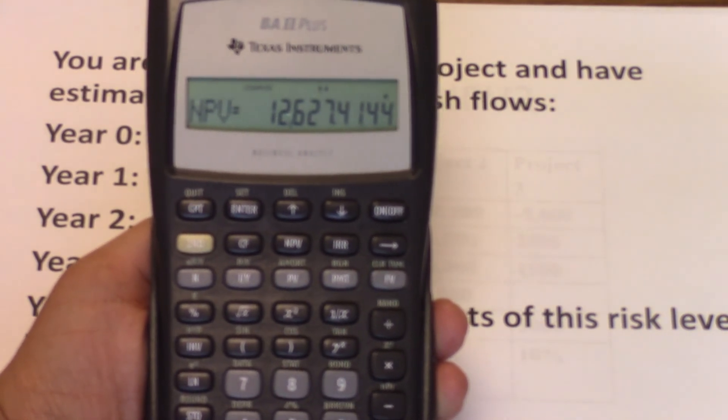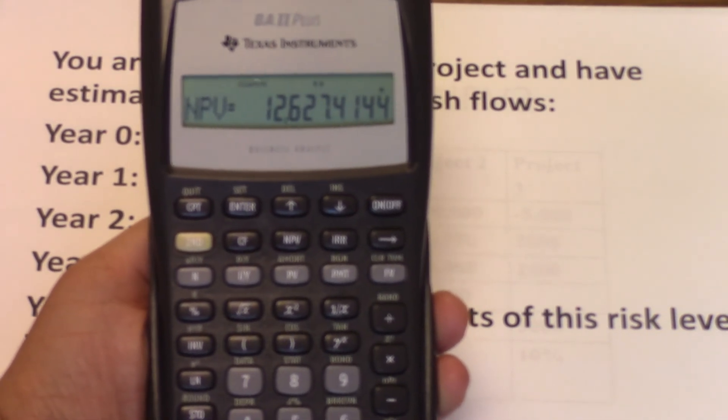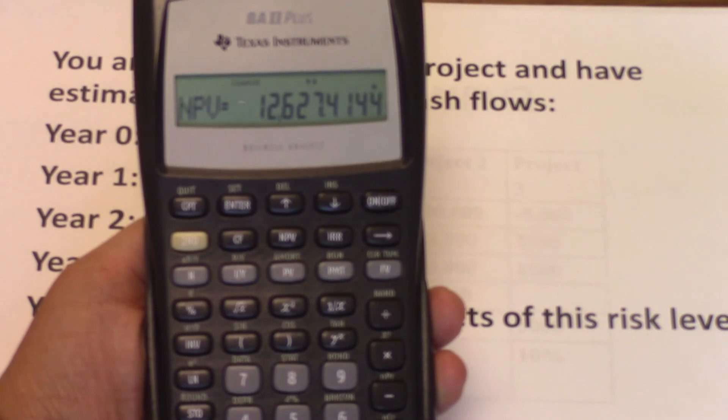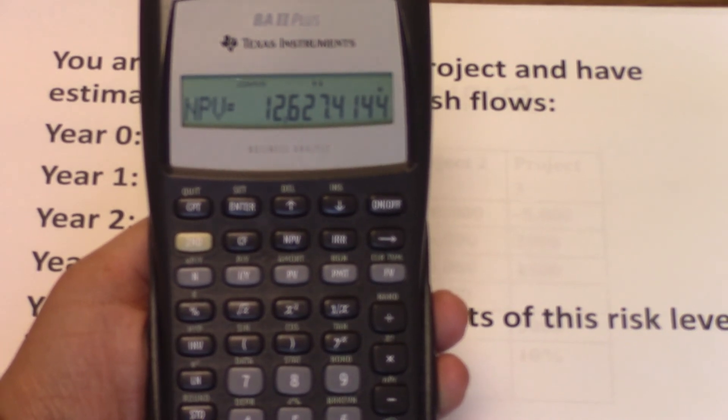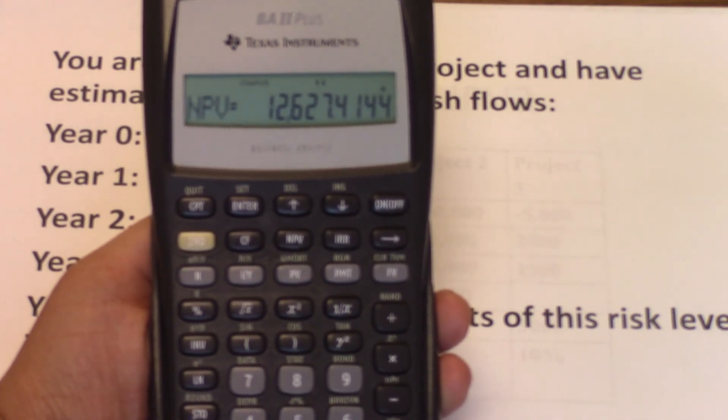This is a net present value that is higher than zero. That means that the present values of all expected cash flows exceed the initial cost by $12,627.41. The NPV is positive. Therefore, we're creating value and we should accept the project.